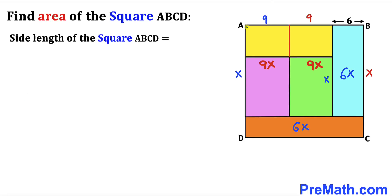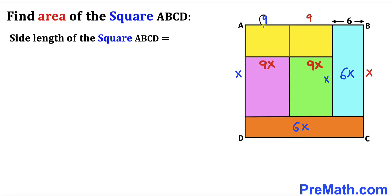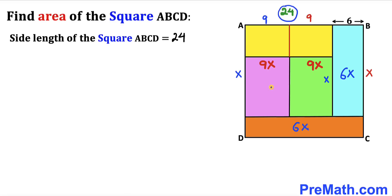We can now see that the side length of square ABCD is 9 + 9 + 6 centimeters. Adding these gives 24 centimeters. Therefore, the side length of square ABCD is 24 centimeters, and since we are dealing with a square, all sides equal 24 centimeters.